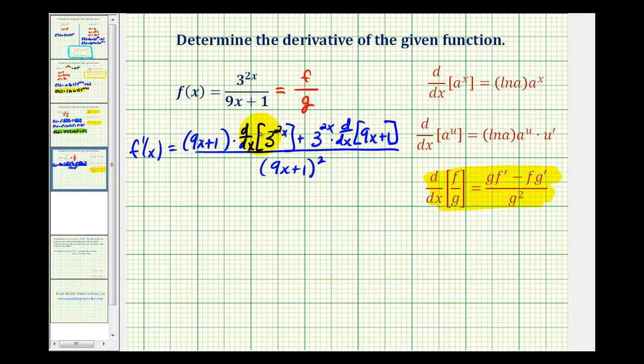So now we'll determine the derivative of the exponential and the derivative of the polynomial. For f prime of x, the numerator is going to be 9x plus 1 times the derivative of 3 to the power of 2x.